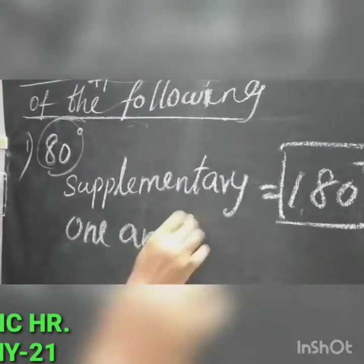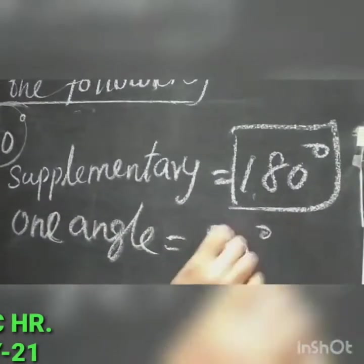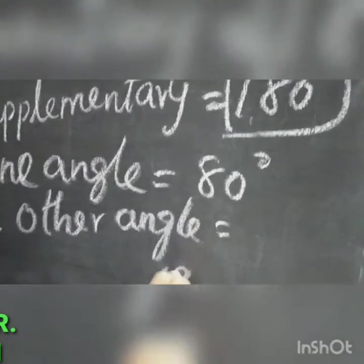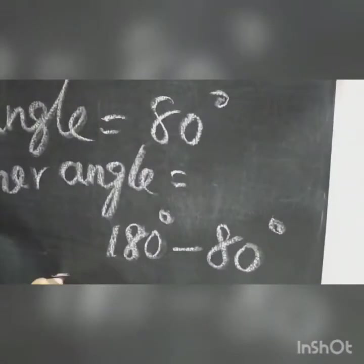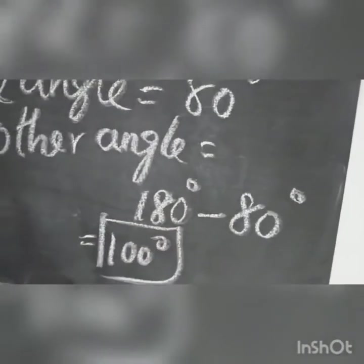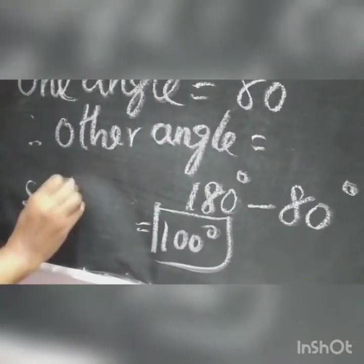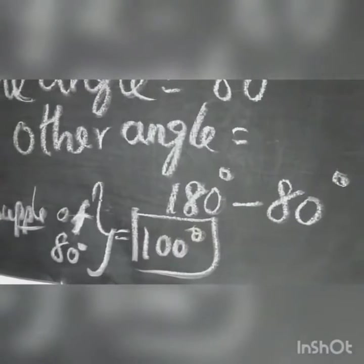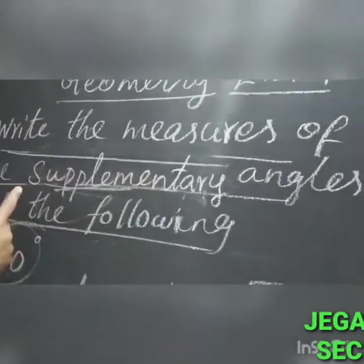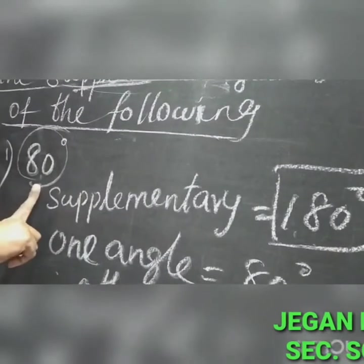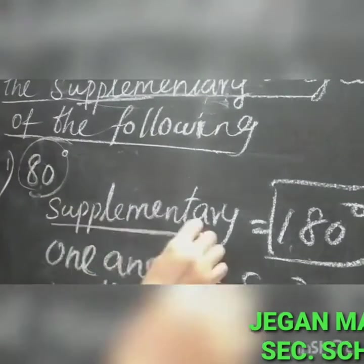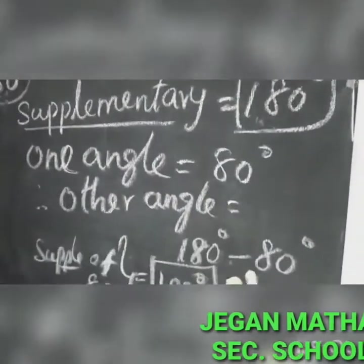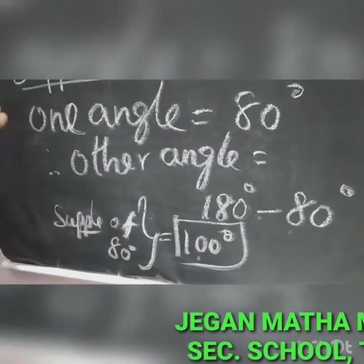The heading is: find out the measures of the supplementary angles of the following. The first sum — 80 degrees is given. You have to find the pair of the other angle. Supplementary means the total is 180 degrees. So other angle equals 180 minus 80 degrees, which is 100 degrees. Therefore, the supplementary of 80 degrees equals 100 degrees.